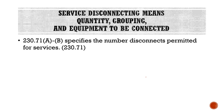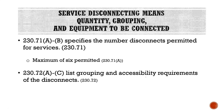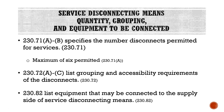Looking at our service disconnecting means, we have quantity, grouping, and equipment to be connected to the disconnect means. Section 230.71A through B specifies the number of disconnects permitted for services — a maximum of six is permitted for any service. We cannot exceed six disconnects for any given service. Section 230.72A through C lists the grouping and accessibility requirements of the disconnects, and Section 230.82A through C lists the equipment that may be connected to the supply side of the disconnecting means. Sections 230.72 and 230.82 cover general ideas about what we have to do and how the service disconnecting means can function.